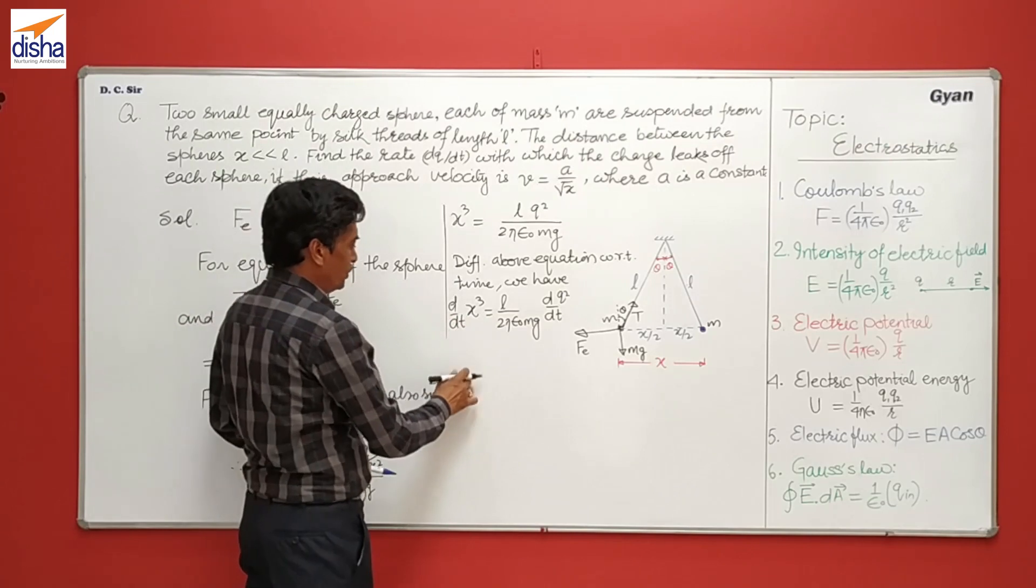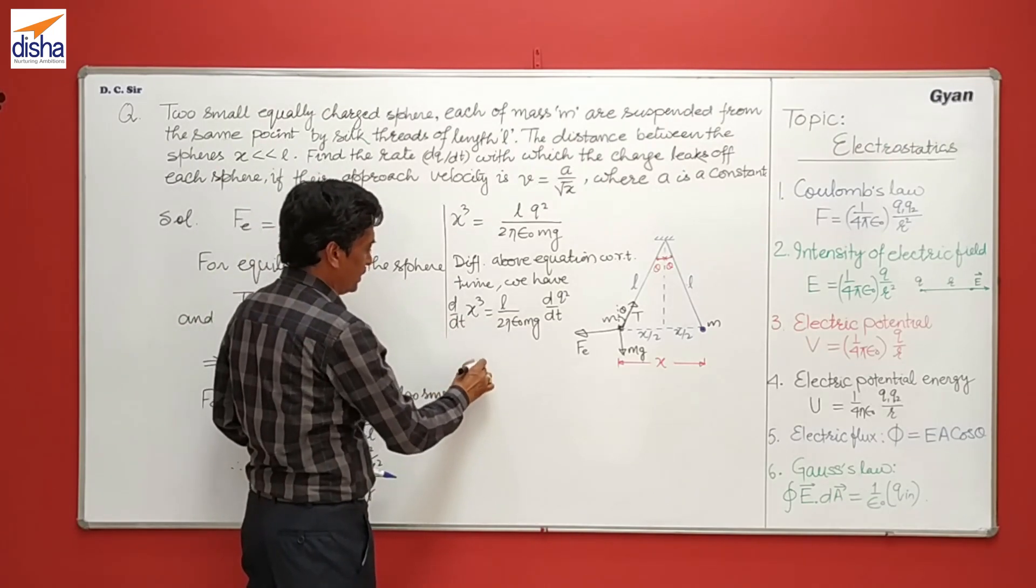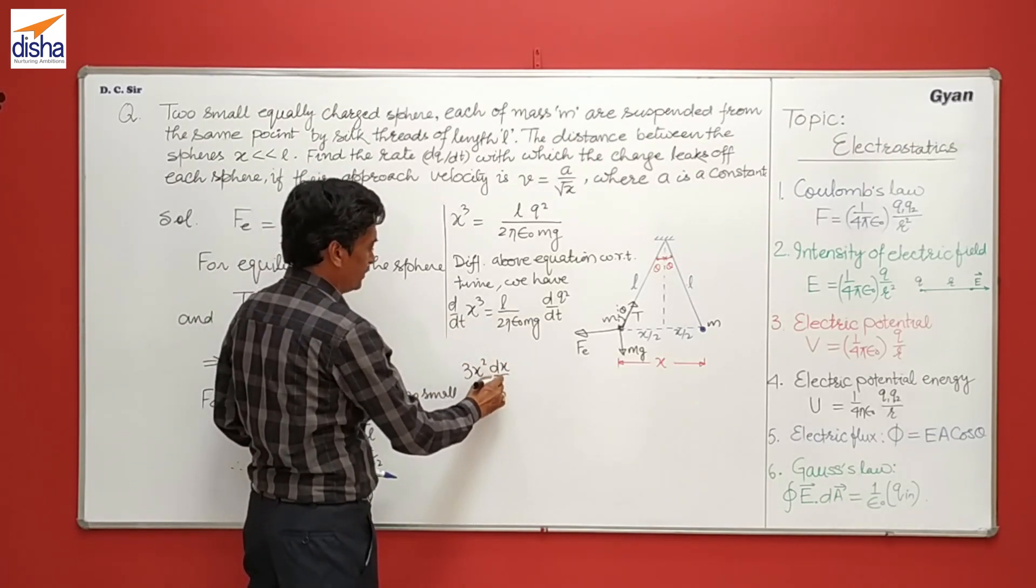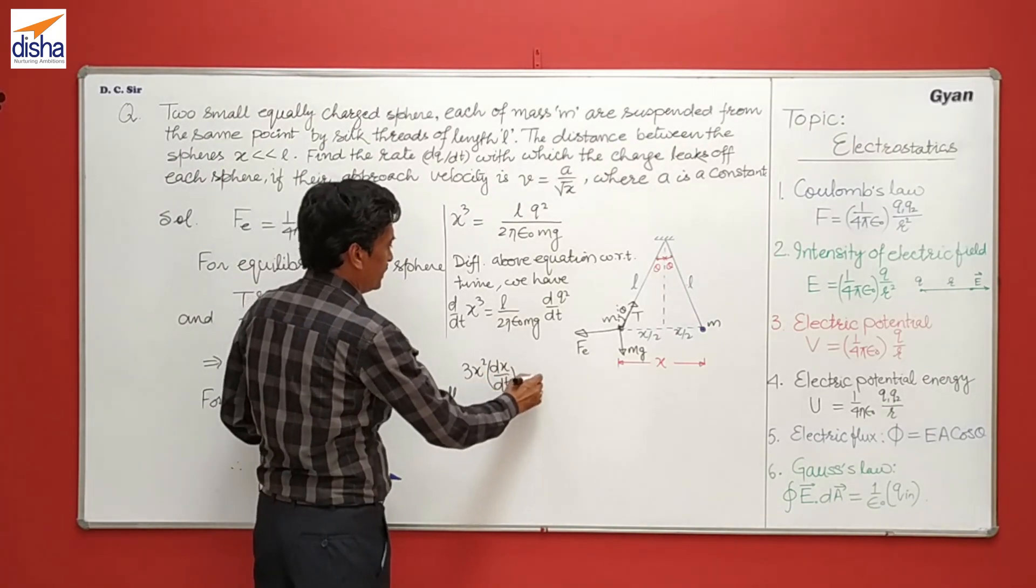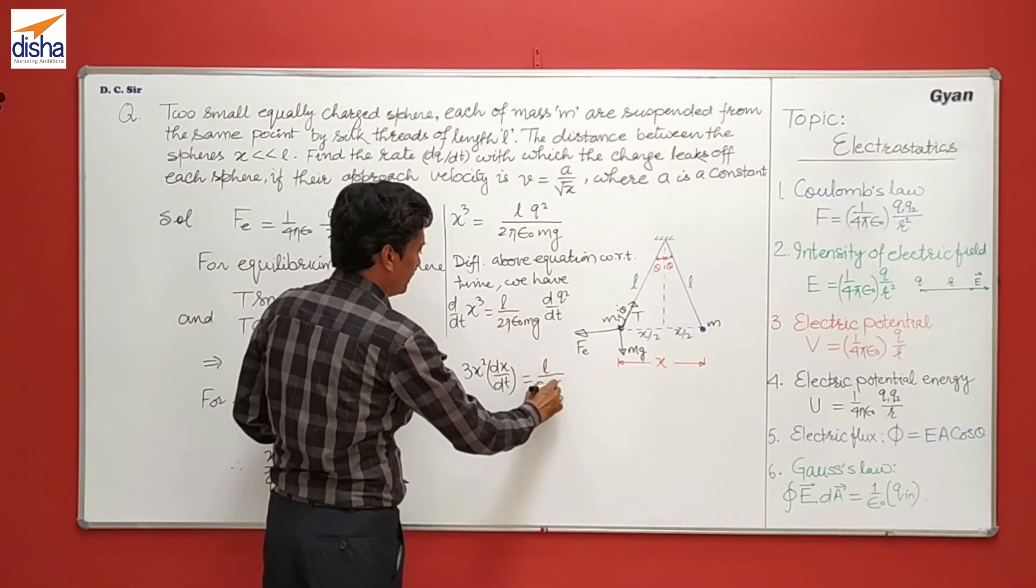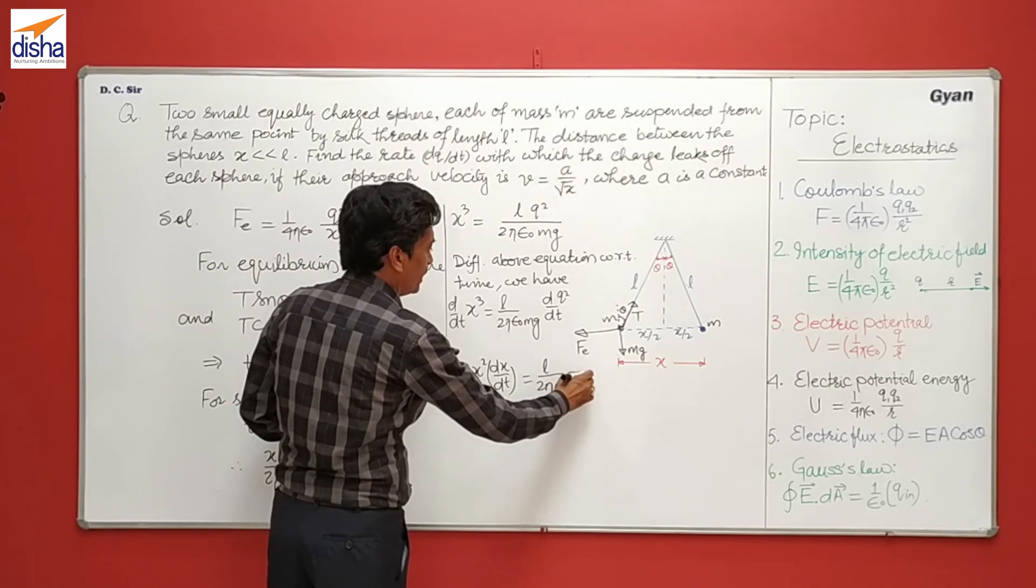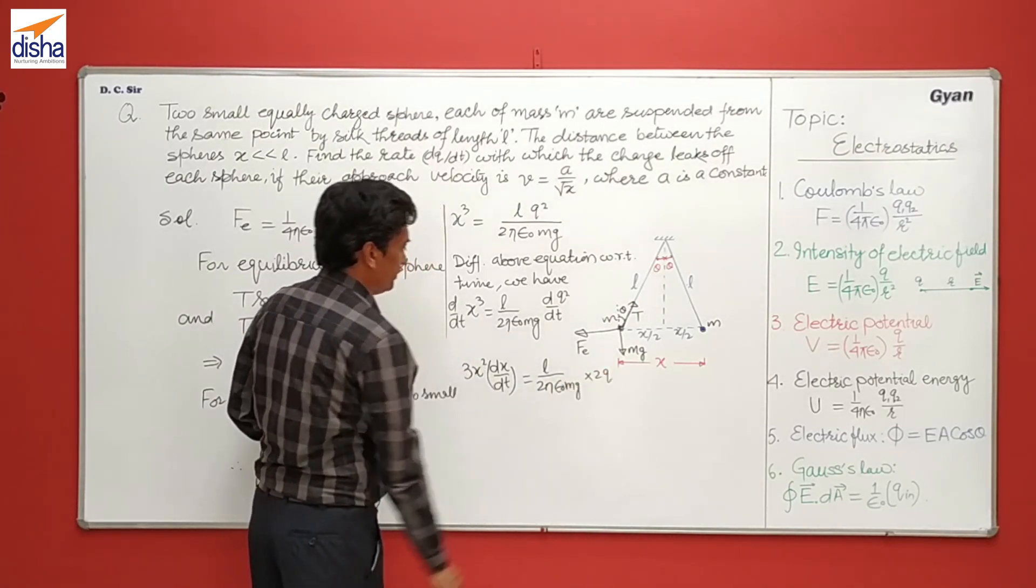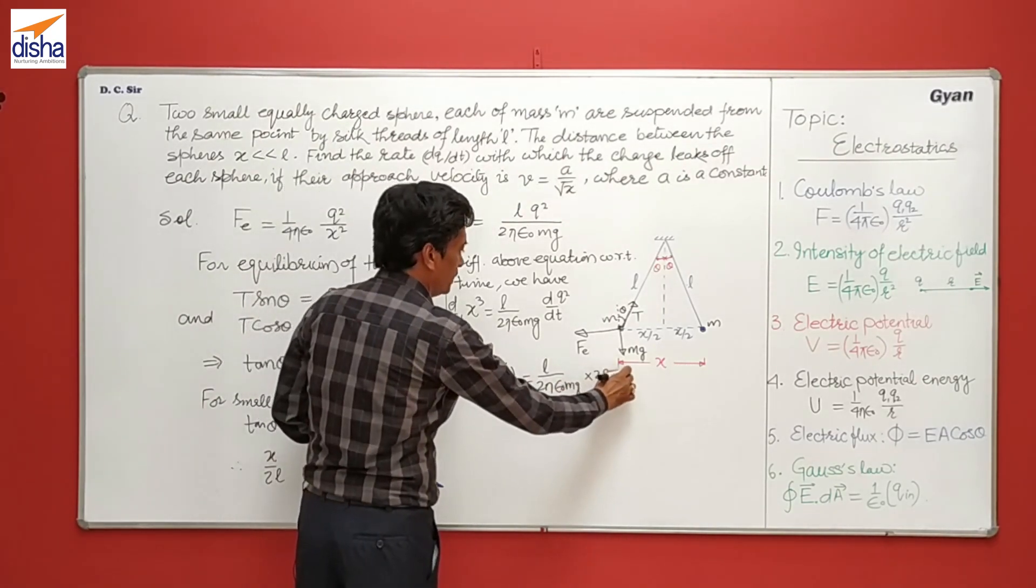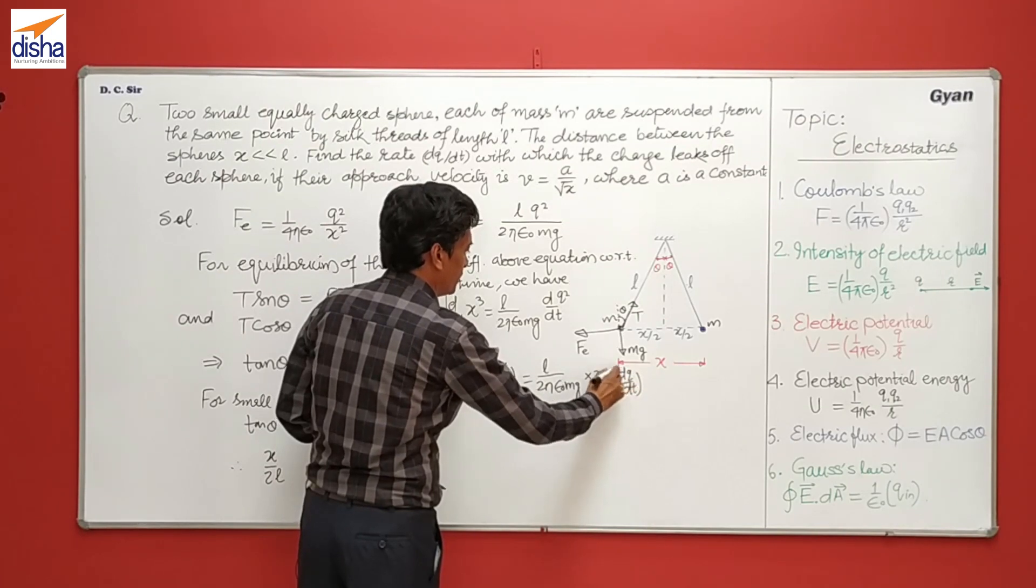Now the differential of x cube here is 3 x squared dx over dt. This is L upon 2 pi epsilon naught Mg, here is 2q, dq over dt.